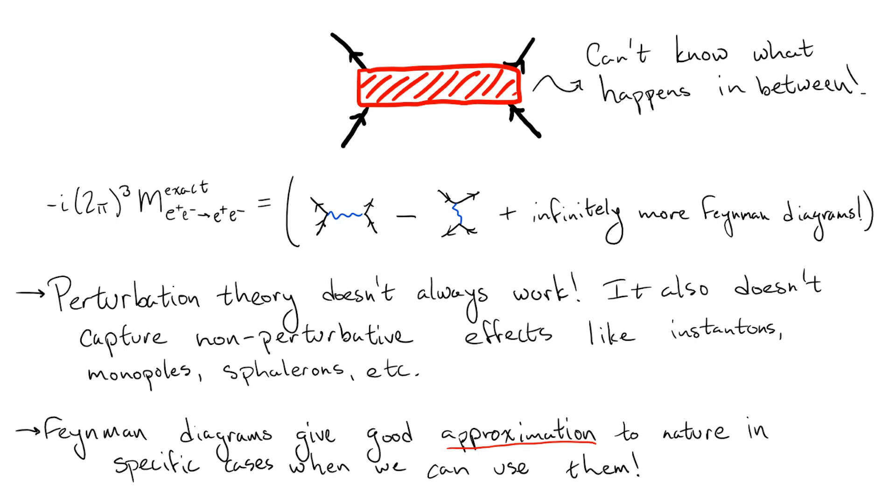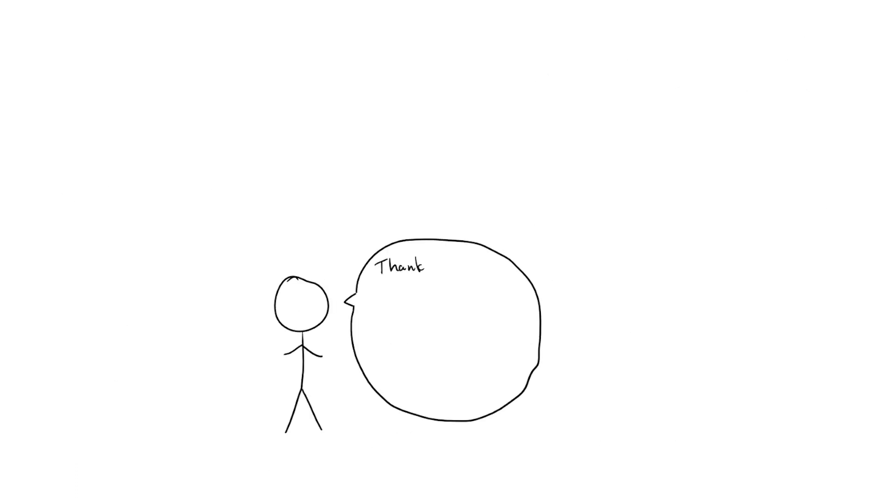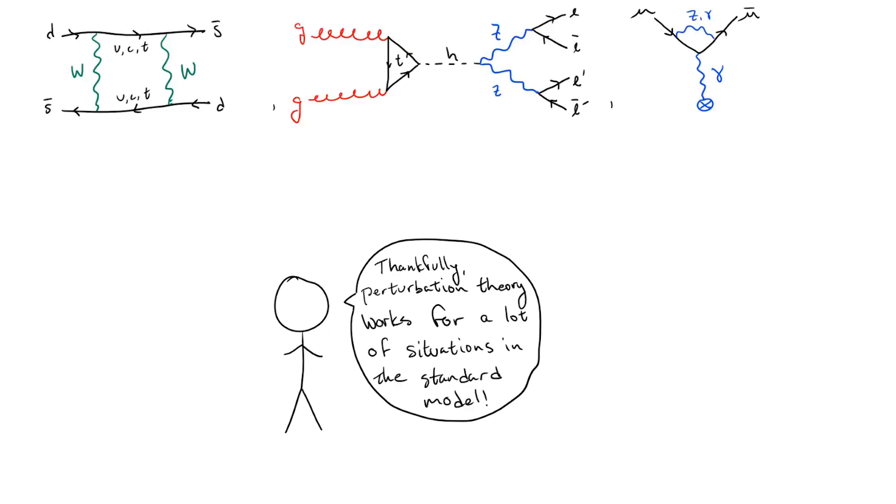Luckily for us, perturbation theory is perfectly valid for much of the standard model, so it's become commonplace to use Feynman diagrams as a quick and easy way to describe certain processes.